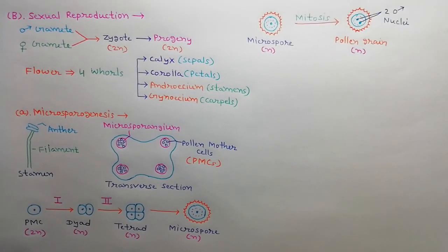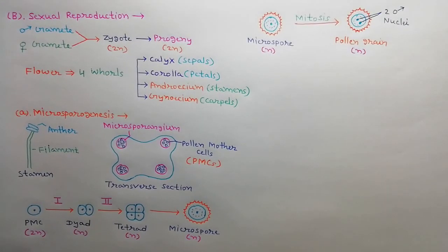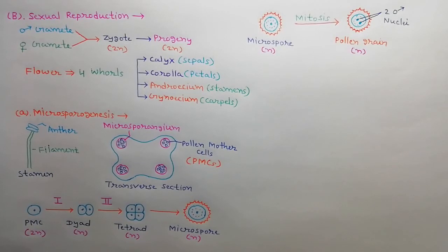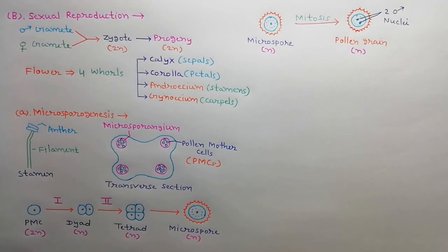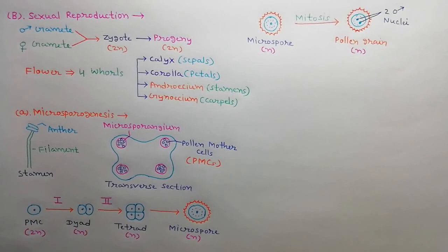Initially, each microspore contains a single haploid nucleus, but later this nucleus undergoes mitosis and produces two male nuclei.